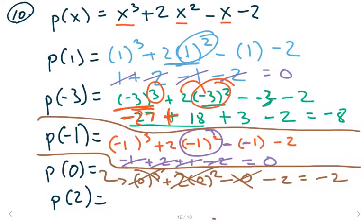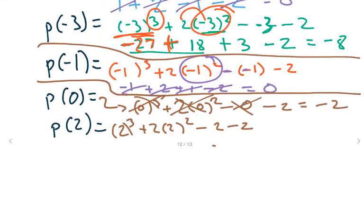The last one is 2, so we'll have 2 cubed plus 2 times 2 squared minus 2 minus 2. And let me draw a line here to separate them. What I want to stress here, excuse my penmanship, this is 2 cubed, 2 cubed is 8. So again, just be careful in the mind, it's very easy to say 6, but it is 8.